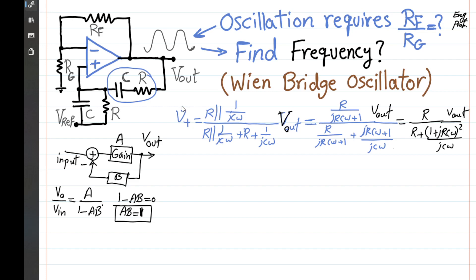Now we are at the positive input terminal of the op-amp. Assuming the op-amp is properly biased and operating in linear mode — not saturating — we have V-plus equal to V-minus. Since this is a non-inverting amplifier, from V-plus to the output we simply get a gain of 1 plus RF over RG. So Vout equals (1 + RF/RG) times V-plus.